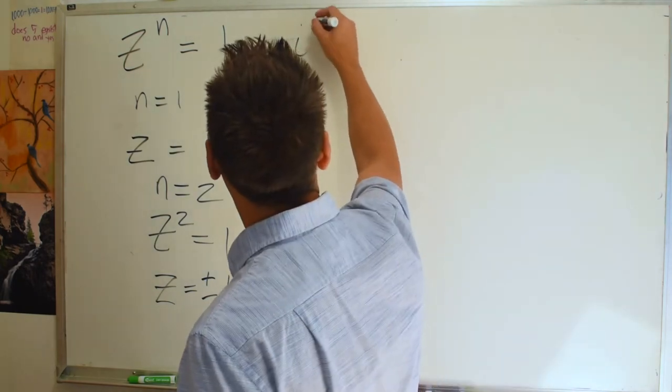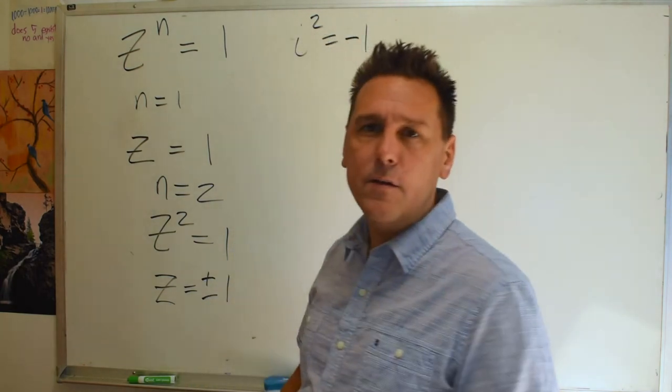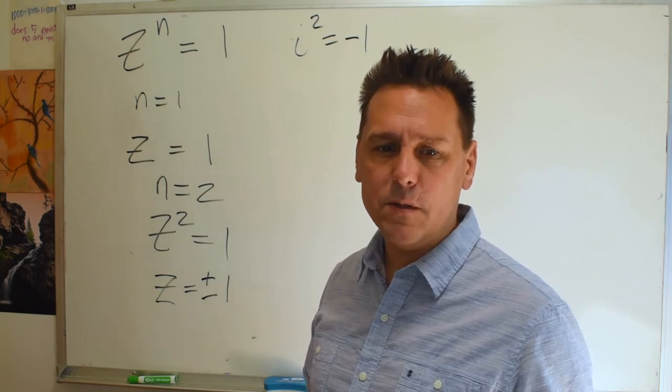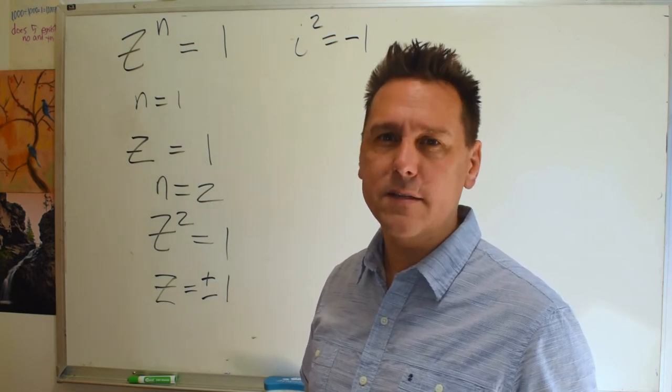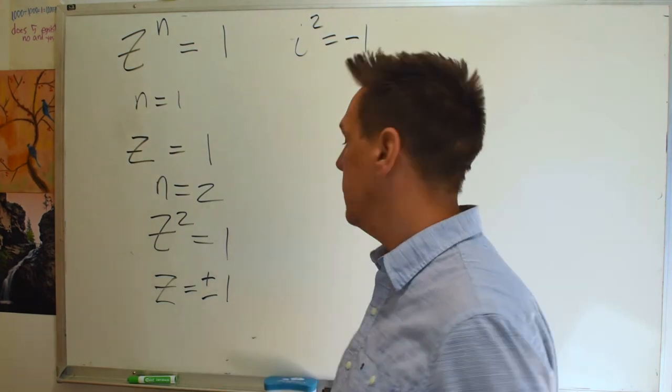i is the number that when you square it you get minus one. And the reason that seems impossible at first is because when you multiply a number by itself it's always positive. So i is already a different kind of number than the ones we're used to.